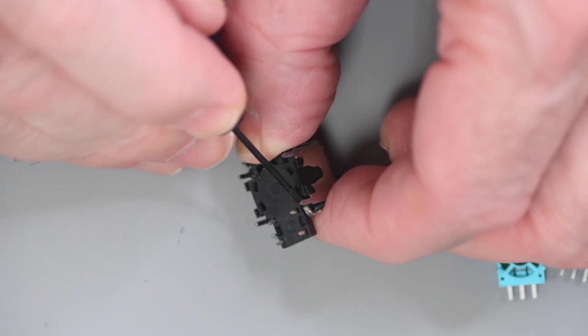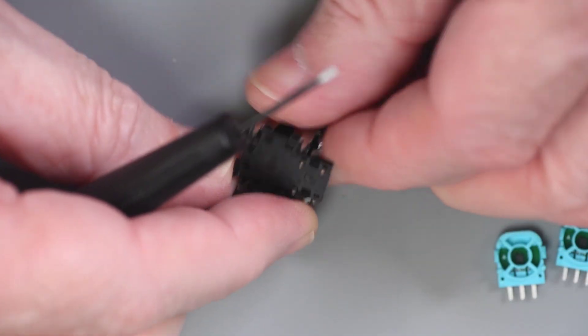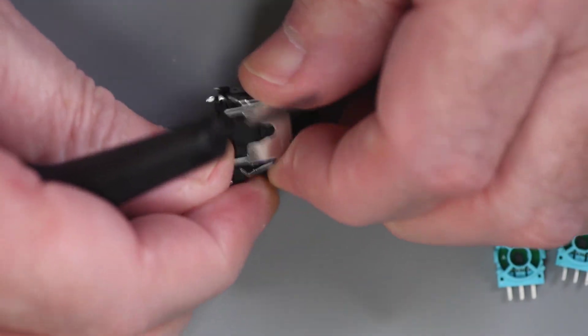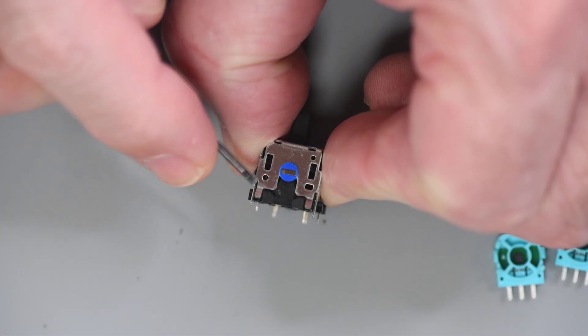There are four tabs bent over the base plate holding it together. That's like all the other joysticks. Even with the tabs bent free, the base is not falling off. The base seems to be a tight fit in the metal housing. That is a bit different.